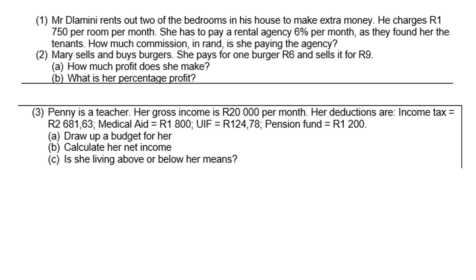Let's look at three examples. Mr. Tlamini rents out two of the bedrooms in his house to make extra money. He charges 1,750 rand per room per month. He has to pay a rental agency 6% per month as they found him the tenants. How much commission in rent is he paying the agency? Second: Mary buys and sells burgers. She pays six rand for one burger and sells it for nine rand. How much profit does she make and what is her percentage profit? Third: Penny is a teacher. Her gross income is 20,000 rand per month. Her deductions are income tax 2,681.63 rand, medical aid 1,800 rand, UIF 124.78 rand, and pension fund 1,200 rand. Draw up a budget, calculate her net income, and determine if she is living above or below her means.